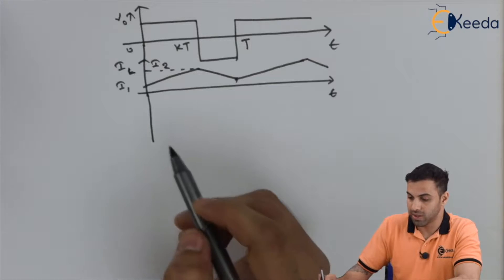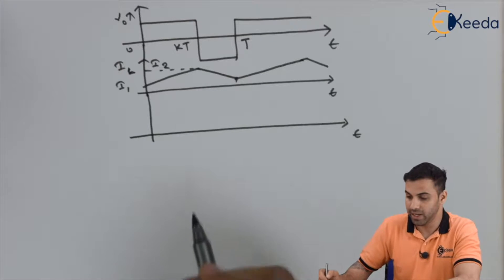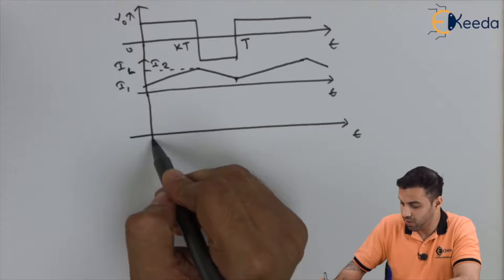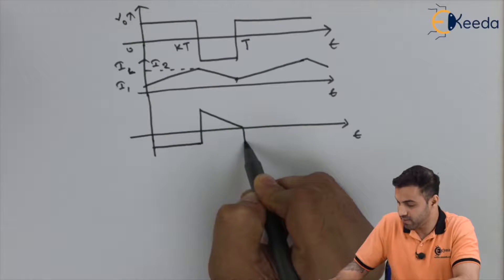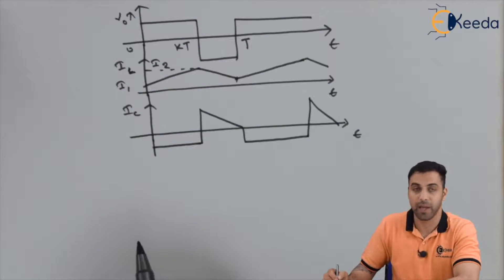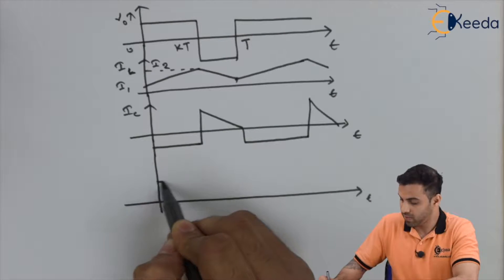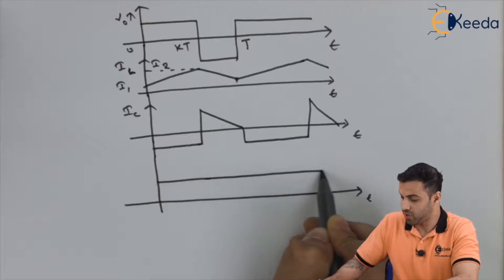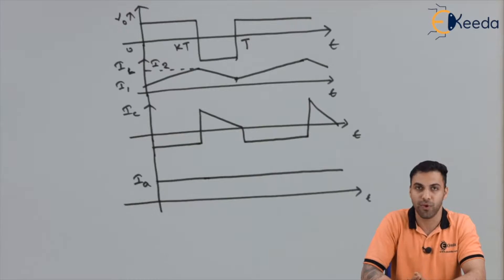If I draw the capacitor current I_c with respect to time, it looks like a waveform that switches between positive and negative regions. The output current appears as a complete straight line because we obtain a constant DC current and a constant DC voltage.